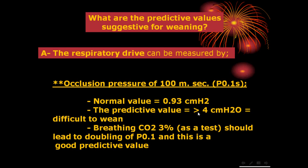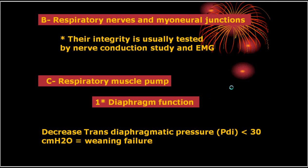The patient might manage for one or two minutes or an hour, but after that will fail. This is the lower limit to take care of when weaning. You can make a test by having the patient breathe 3% CO2 and see whether the P0.1 doubles. If it doubles, the patient still has a large reserve capacity and a good drive.